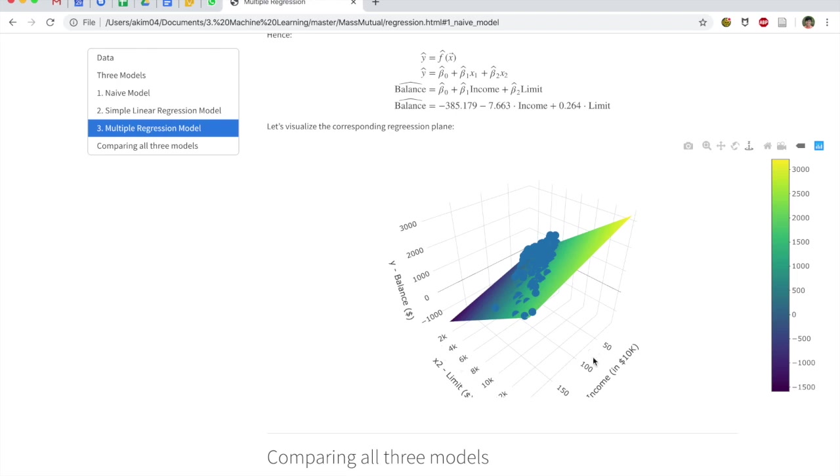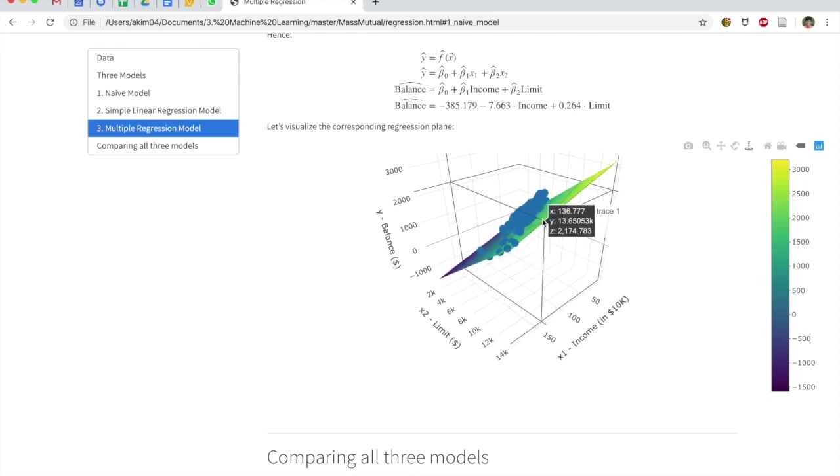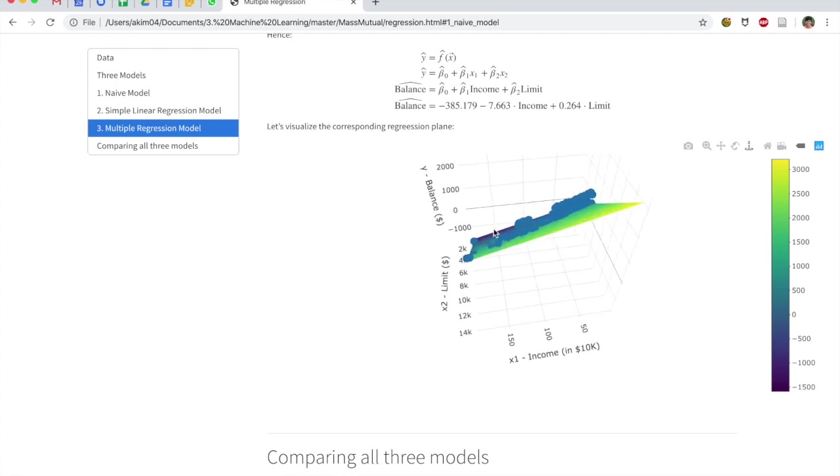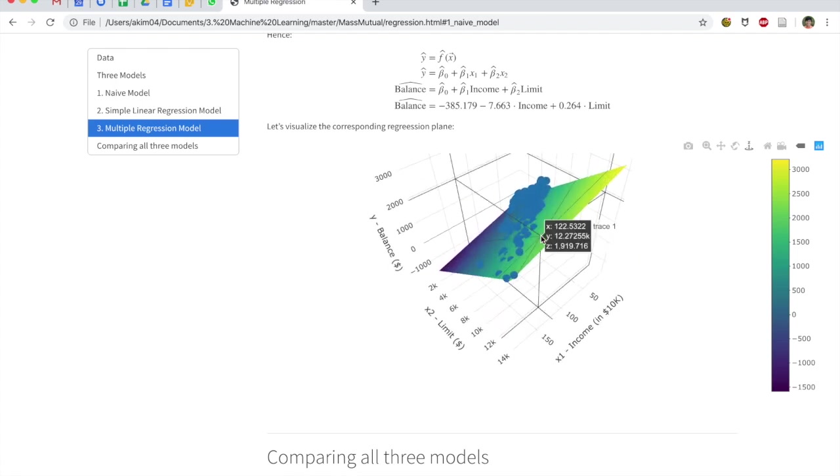So that's what's going on over here. We have income on the x-axis here. We have x2 limit on the—again, now in a 3D plot—y here. And then we have the outcome variable along the z-axis. So why don't we play around with that? Now we have a regression plane.